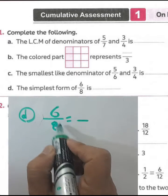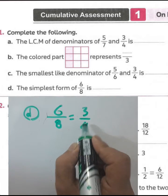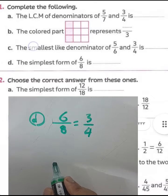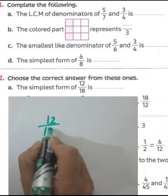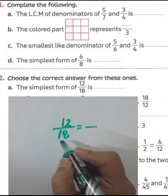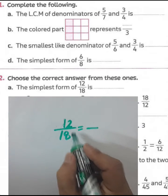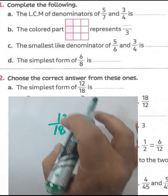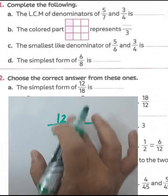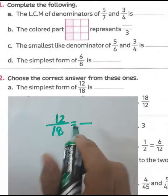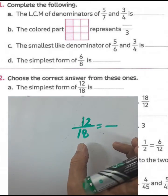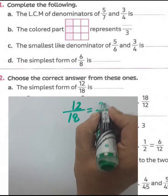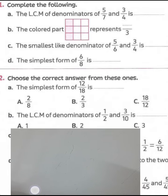Write twelve here. Letter D: find the simplest form of six over eight. Divide numerator and denominator by two — six divided by two equals three, and eight divided by two equals four. Question number two: simplify twelve over eighteen. The highest common factor of twelve and eighteen is six. Twelve divided by six equals two and eighteen divided by six equals three, so the simplest form is two over three.